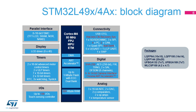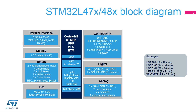STM32L49X/4AX devices have the largest memory footprint and graphical peripherals like parallel camera interface and ChromART accelerator for advanced graphics processing. They also include a hash processor supporting SHA-256 functions, a clock recovery system (CRS) allowing crystal-less operation of the USB, an additional I2C, an additional CAN, support for dual-bank Quad-SPI flash memory interface to improve bandwidth, and support of up to 136 GPIOs through the BGA-169 package.